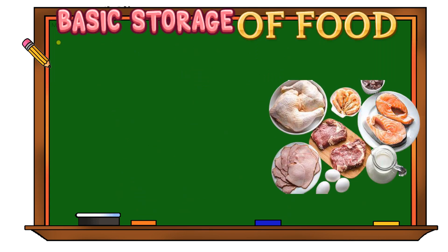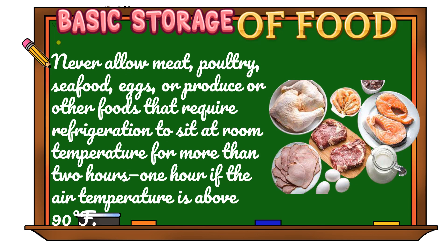Here are some tips in storing materials such as food and medicine in order to avoid the rapid change that may cause damages to the material. The basic storage of food: never allow meat, poultry, seafood, eggs, or produce, or other foods that require refrigeration to sit at room temperature for more than 2 hours — 1 hour if the air temperature is above 90 degrees Fahrenheit.